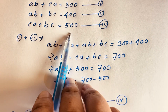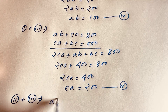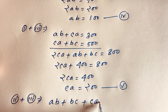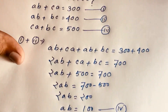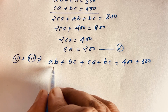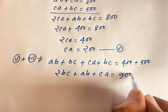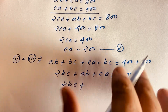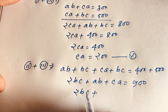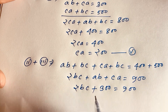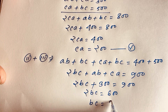Now I add equation 2 and equation 3. Equation 2 gives ab plus bc equals 400, and equation 3 gives ca plus bc equals 500. Adding them: ab plus 2bc plus ca equals 900. Since ab plus ca equals 300, we get 2bc equals 900 minus 300, which is 600. So bc equals 300. This is our sixth equation.